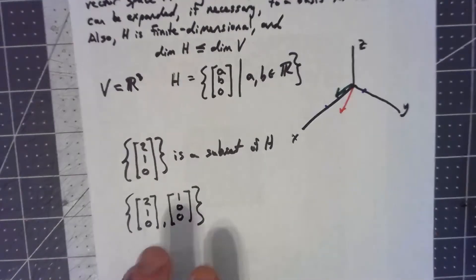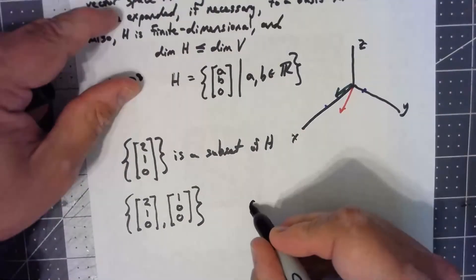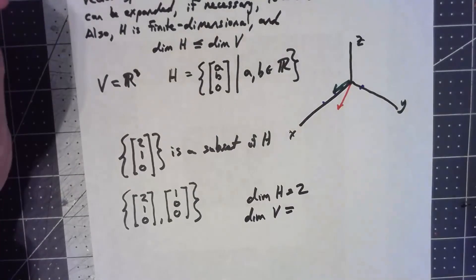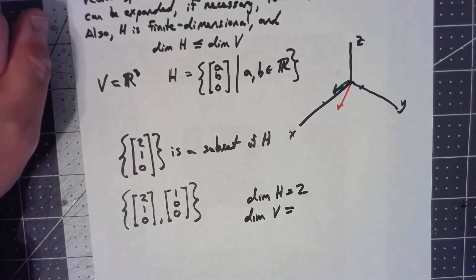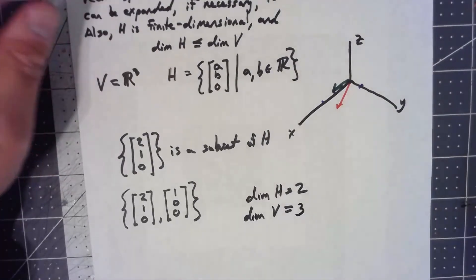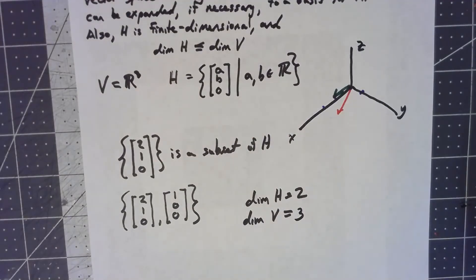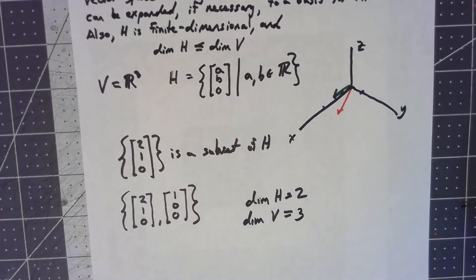By creating that basis, the dimension of H is 2. The dimension of V, using the standard basis {(1,0,0), (0,1,0), (0,0,1)}, is 3. So the dimension of H is less than or equal to the dimension of V. That's basically how the proof goes as well — they handle special cases like when the subspace is just the zero vector, but the key idea is that we can always add vectors in, remain linearly independent, until we span the entire space.